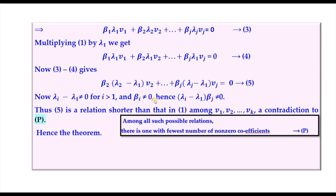This shorter relation (equation 5) contradicts statement P, which said we had chosen the relation with the fewest nonzero coefficients. This contradiction shows that v₁, …, vₖ must be linearly independent, and our assumption of linear dependence was wrong. The theorem is proved.